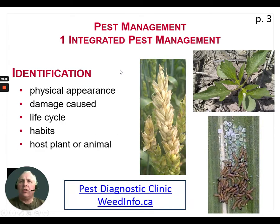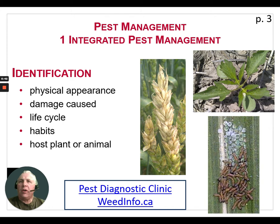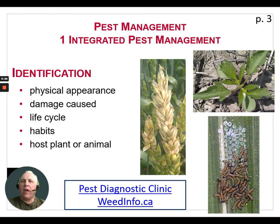Identification of the pests may include the physical appearance of the pest itself. Sometimes we don't see the pest and we may have to figure out what it was by the damage that's been caused. It's important to know the life cycle of pests, to know their habits, and also to know whether they survive and live on other host plants or animals.